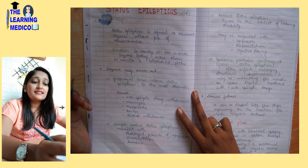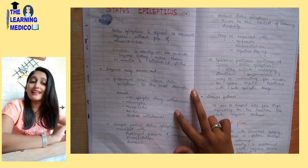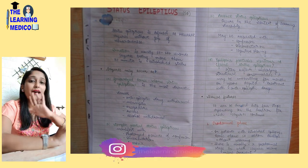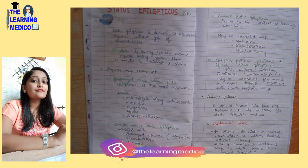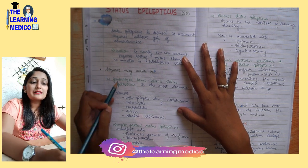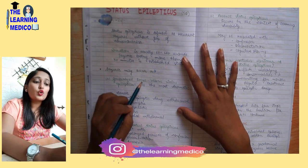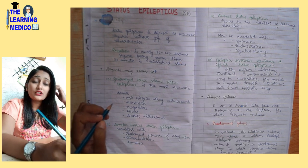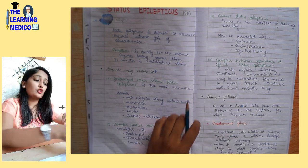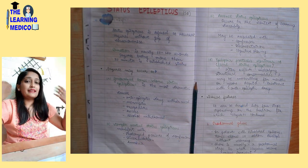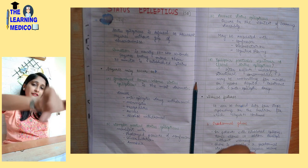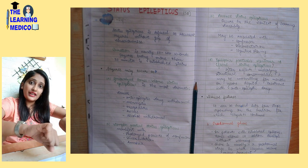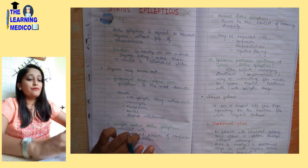Seizures can occur as partial seizures or generalized seizures. In generalized seizures, we have tonic-clonic status epilepticus, which is the most dramatic situation. The patient is first unconscious, then has stiffness, and then shaking.